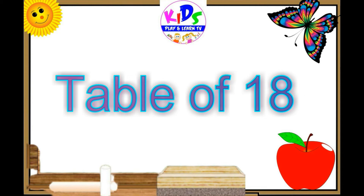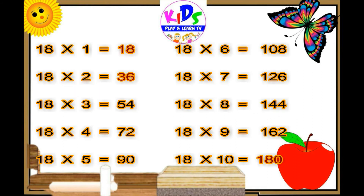Hello, let's learn the table of 18. 18 ones are 18, 18 ones are 18. 18 twos are 36, 18 twos are 36. 18 threes are 54, 18 threes are 54. 18 fours are 72, 18 fours are 72. 18 fives are 90, 18 fives are 90.